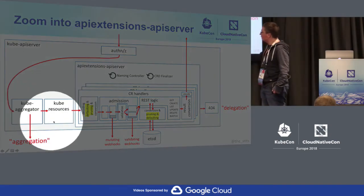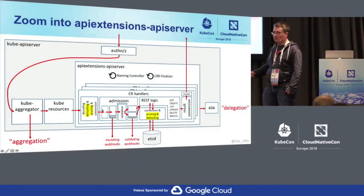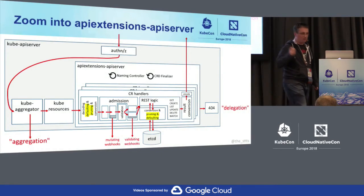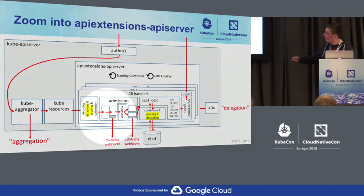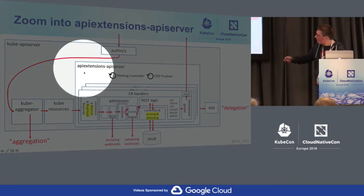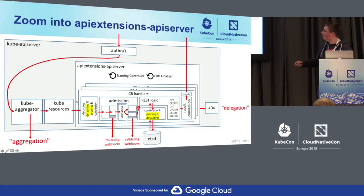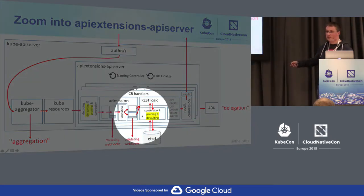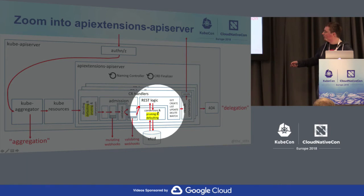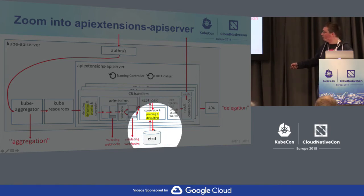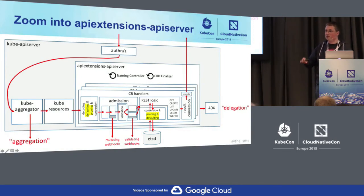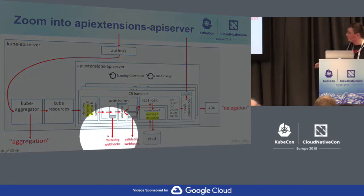It's about API machinery — this is our standard mechanism, and for CRDs some things are a bit different. Defaulting happens on the input when you post something to the server, but it also happens when you read something from etcd — decoding, conversion, pruning, defaulting. So if you have an old object and you add a default to your schema, the default is applied when you get the object. This cannot be done with webhooks — webhooks are really just for input data, not connected to etcd.